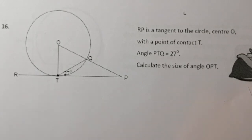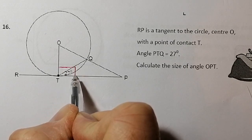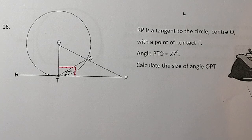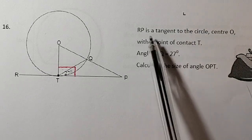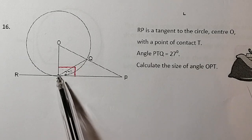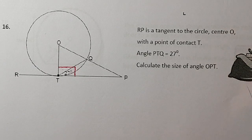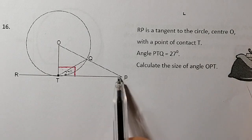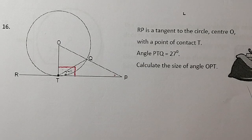RP is a tangent, touching the circle at one point only. Again, I know the property of a tangent to a circle — the tangent and the radius meet at 90 degrees. Angle PTQ is 27 degrees — that's P to T to Q. And I've got to calculate the size of angle OPT — O to P to T — that angle sitting in there, how far it's opened up.